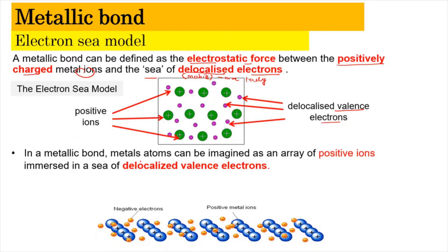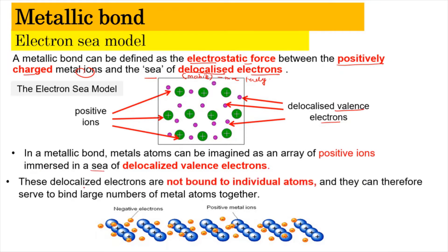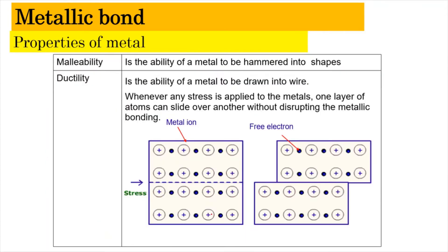In the metallic bond, the metal atom can be imagined as an array of positive ions immersed in a sea of delocalized valence electrons. These delocalized valence electrons are not bound to any individual atom; they can move freely and serve to bind a large number of metal atoms together. Because of this, the freely moving electrons bring about specific properties of metals, including malleability and ductility.